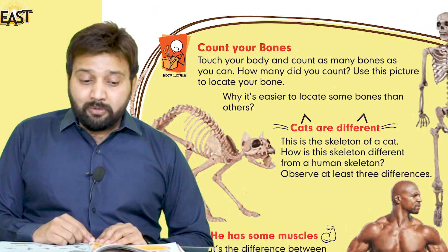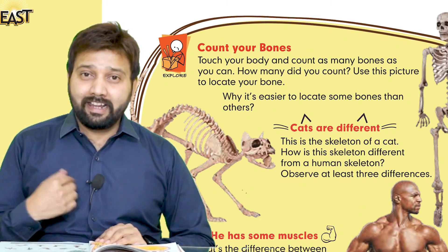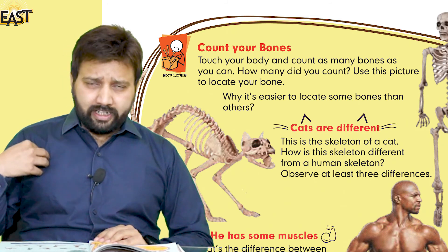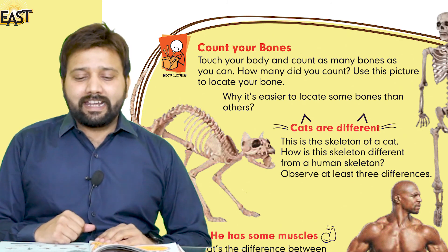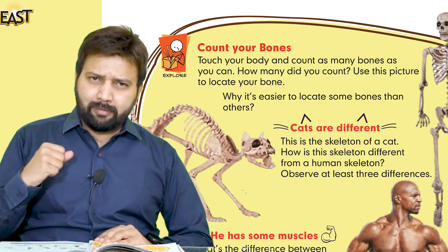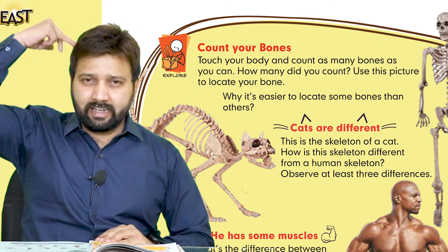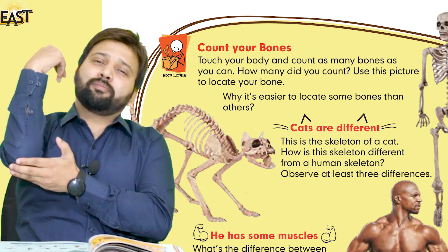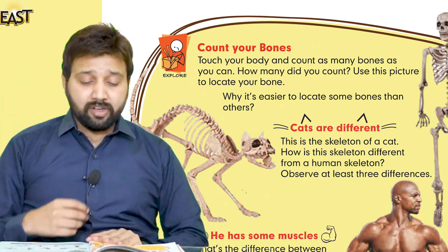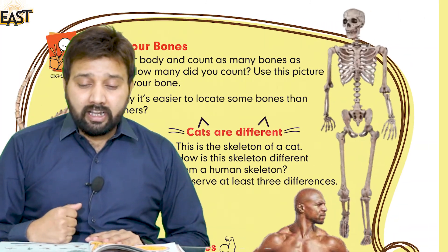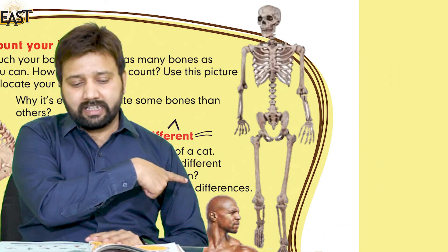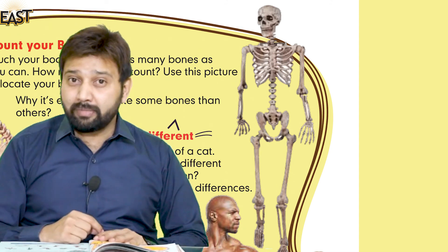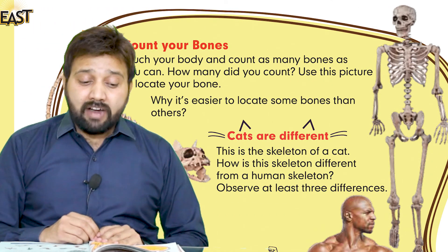So count your bones — ہمیں اپنی جو ہڈیاں ہیں body میں ان کو count کرنا ہے. Touch your body and count as many bones as you can. Let me try too — یہ ہمارا skull ہے، ایک تو یہ ہو گئی ہماری bone، اور یہ ہمارا elbow ہے. اب آپ اپنی body کو touch کریں اور جتنی بھی bones آپ count کر سکتے ہیں کریں. Use this picture — یہ جو skeleton کی picture نظر آ رہی ہے اس کے ذریعے آپ locate کریں کہ آپ جو bone touch کر رہے ہیں وہ اس picture میں کہاں پر ہے۔